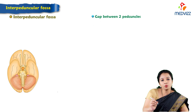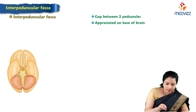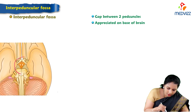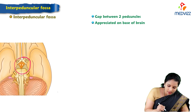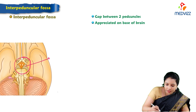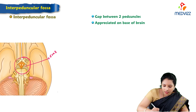The gap between the two peduncles is called the interpeduncular fossa, which is appreciated at the base of the brain. In a closer view, this area is the interpeduncular fossa where we can see the crus cerebri of the midbrain. This is the only part of the midbrain which is seen externally — the crus cerebri of the midbrain.